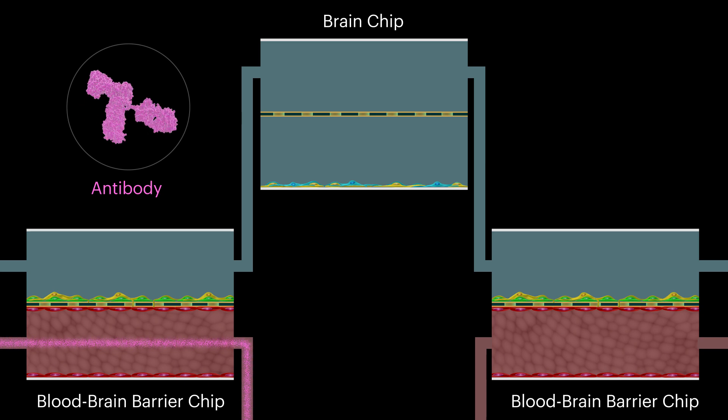Large molecules such as antibodies flowing through the vascular channel of the blood-brain barrier chip do not enter the perivascular channel or reach the neurons in the brain chip, again mimicking a living brain.